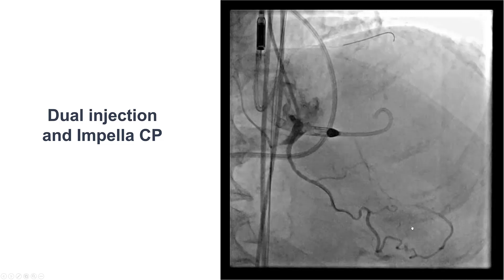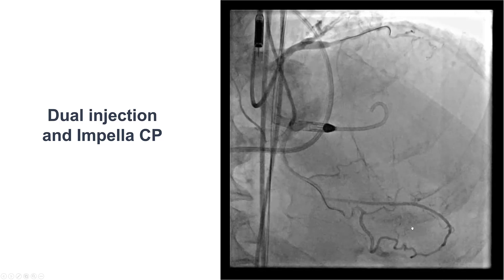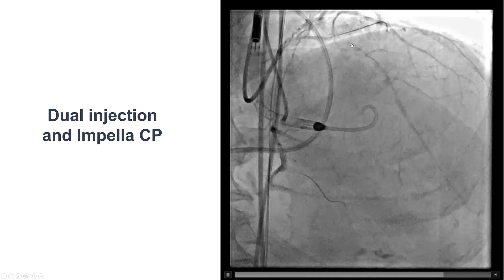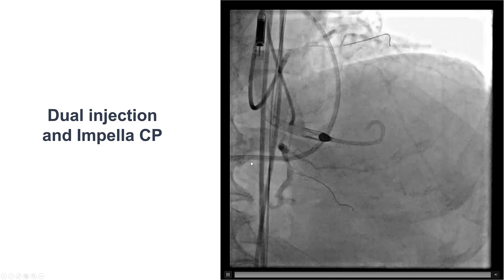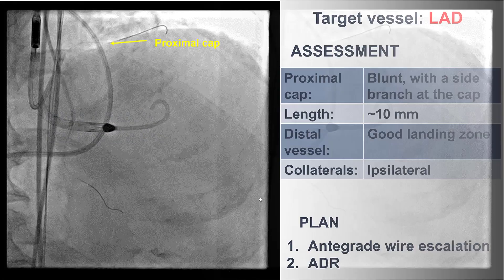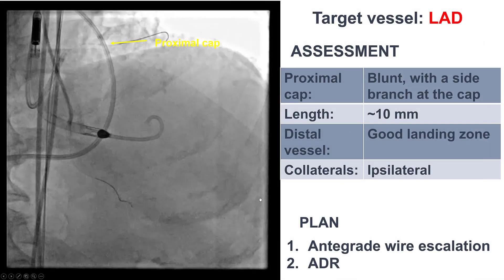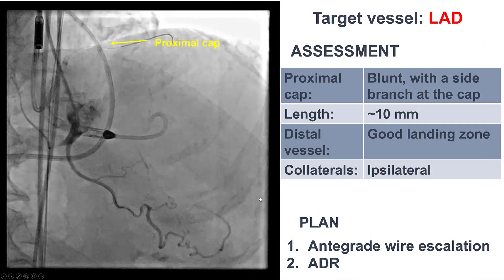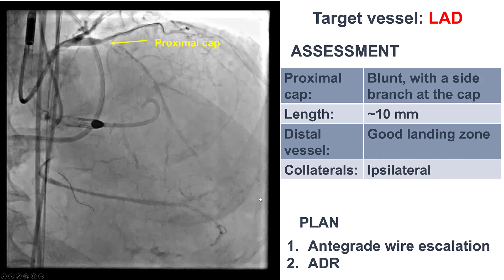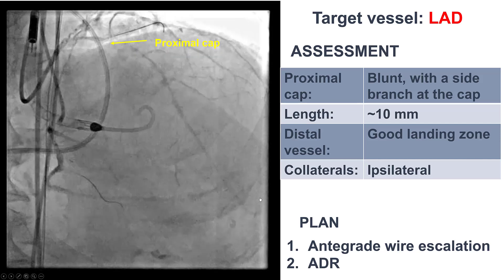This is the dual injection, showing the CTO of the LAD, CTO of the circumflex, and CTO of the right coronary artery. We decided to start with the LAD because it appeared quite favorable.